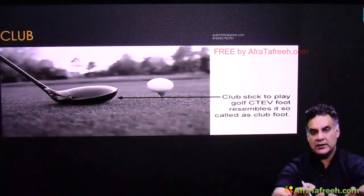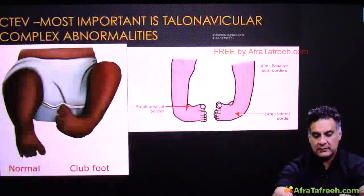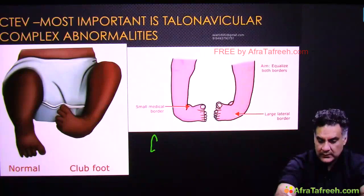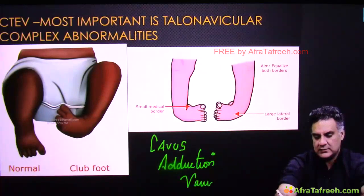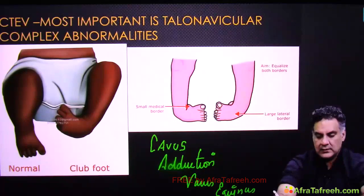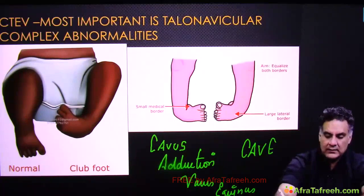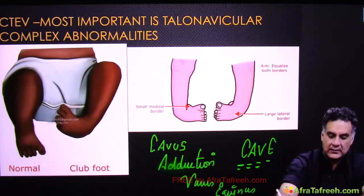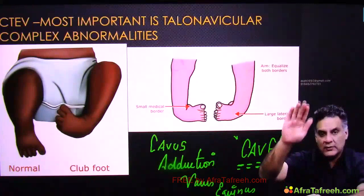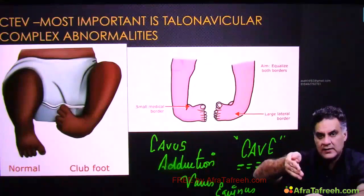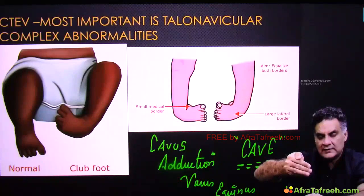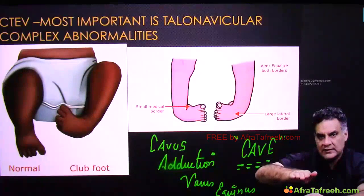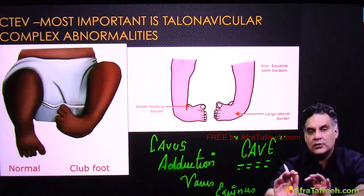Congenital talipes equinovarus has four components to remember: C — cavus (increased plantar arch); A — adduction (medial deviation of forefoot and midfoot); V — varus (inversion); E — equinus. This is the order in which you should correct it: first correct the arch, then adduction, then varus, then equinus. If you do not correct in this order, rocker bottom foot will occur.